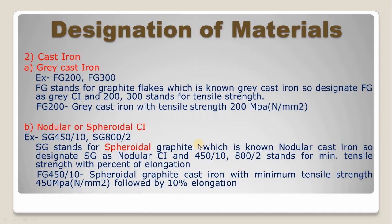Second, we will see cast iron. There are basically four types of cast iron, but designation is given on the basis of three. The first one is grey cast iron. For designating grey cast iron, the word FG is used. FG stands for graphite flakes, which is known as grey cast iron. The remaining digits stand for the tensile strength of the cast iron.